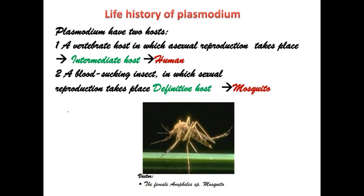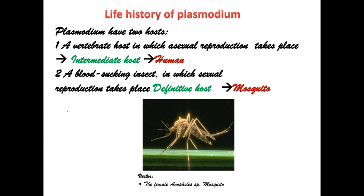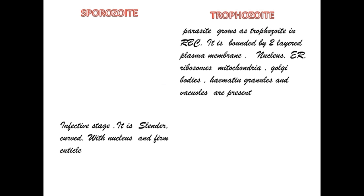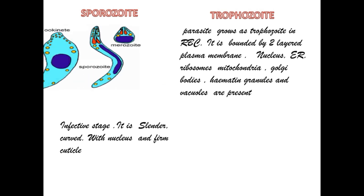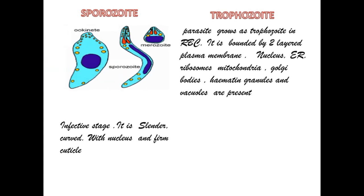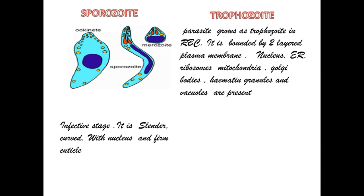The female Anopheles species of mosquito acts as the vector in its life history. There is an infective stage called the sporozoite, which is slender and curved with a nucleus and firm cuticle.